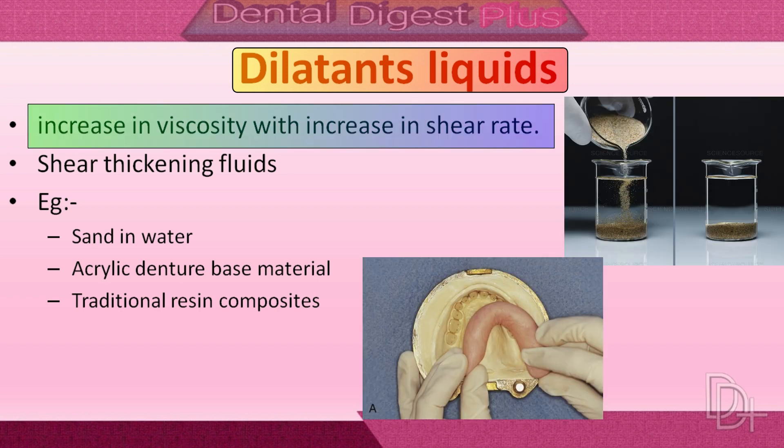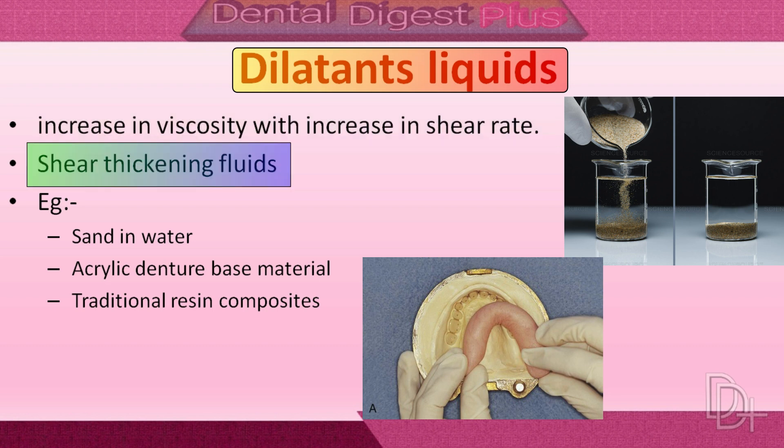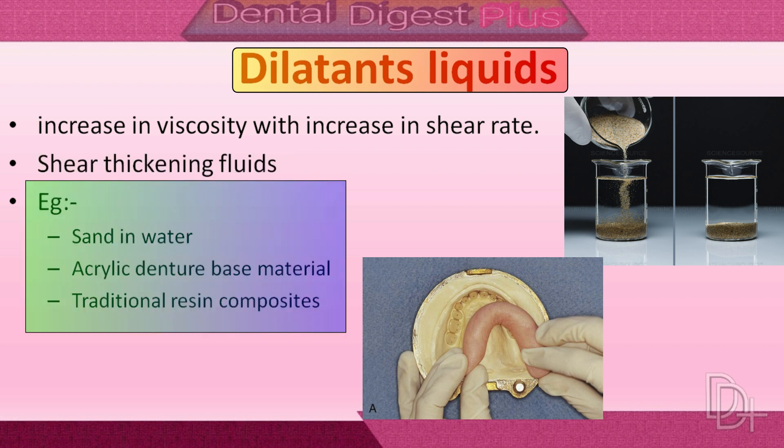Dilatant liquids exhibit an increase in viscosity with an increase in shear rate — they are shear-thickening fluids that become more rigid as the rate of deformation increases. Examples include sand in water. In dentistry, acrylic denture base material and traditional resin composites are examples of dilatant liquids.